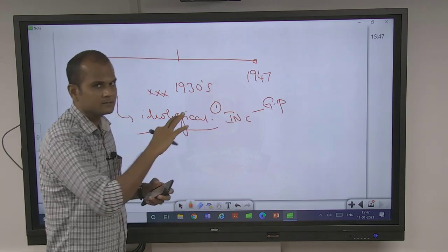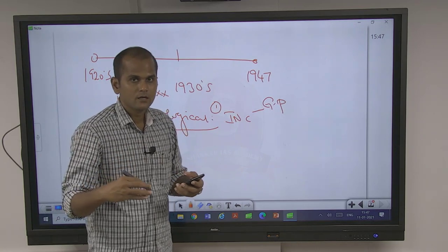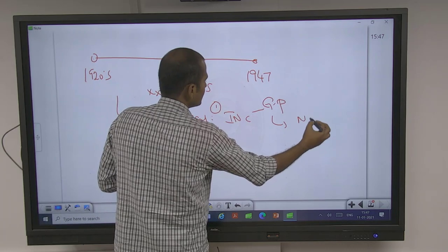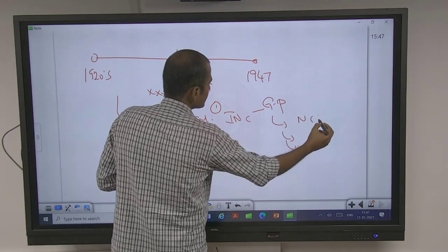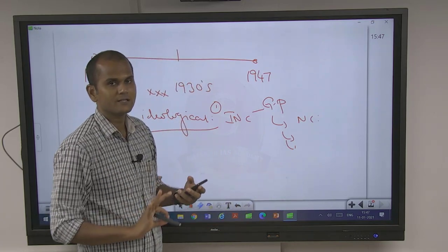So Gandhian phase and all the Gandhian movements - NCM, CDM, a brief idea. Here just non-cooperation, here civil disobedience, here quit India. It's one thing.